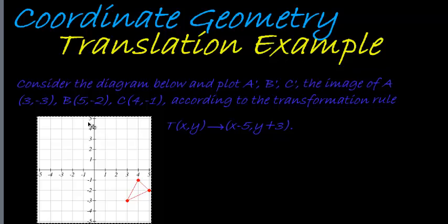Here we have another translation example. This time, instead of giving us a description, they give us the transformation rule. Let's read the question. Consider the diagram below and plot the points A accent, B accent, and C accent.